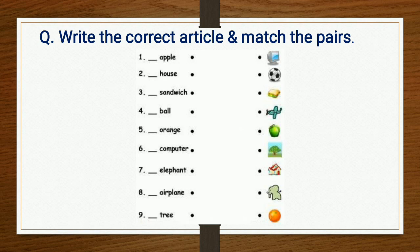Last one is orange. The word orange starts with the letter O, and as we have seen, the vowels are A, E, I, O, U, so we write AN — an orange. Children, you have to put the correct article for the remaining words and match the pairs. This is your activity.